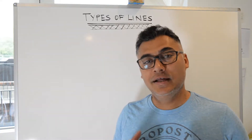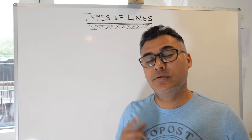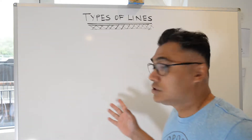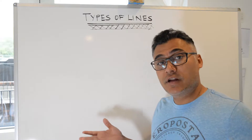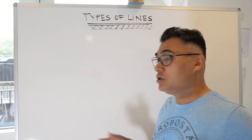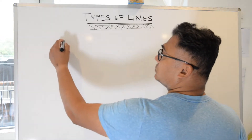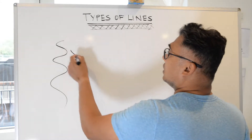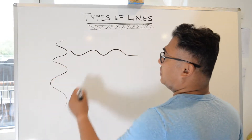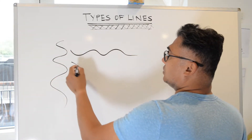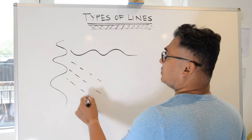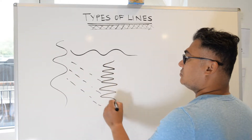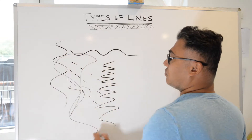Hi, welcome everyone. Today we'll be looking at different types of lines. To start things off, there are many different types of lines one can use — curvy lines, wavy lines, which are sort of the same thing, dashes, zigzag lines, and all sorts of random squiggles. They're all lines.